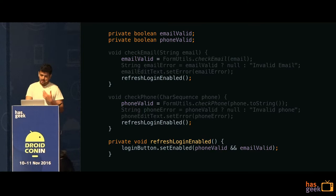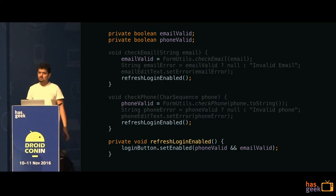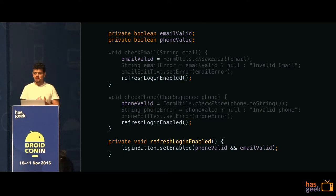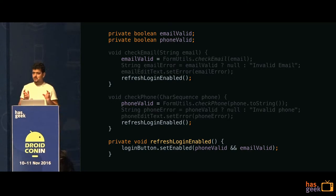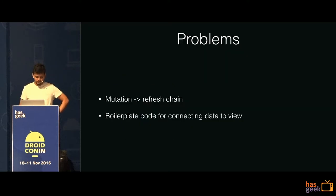The root cause of this is mutation. Because our login enabled state depends on phone valid, and because the phone valid variable can change, whenever we change anything we need to think about what else depends on this and refresh that too. That is a very common source of errors — you change something, forget to update something else, and later it crashes and you realize you forgot to invoke that. The first problem is mutation. The second issue is that capturing input change is such a common phenomenon in our apps that this 10-15 lines of code is not justified. We need a very concise way to deal with this change.